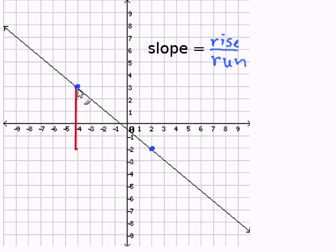In this case, to get from this point to this point, I have to go down 5. So, I'm going to write negative 5.